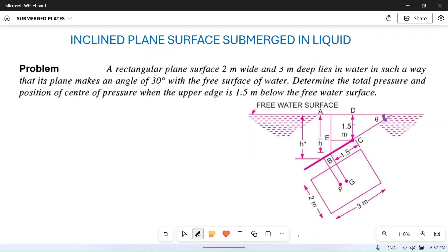This angle theta with free surface of water is 30 degrees. Determine the total pressure and position of center of pressure when the upper edge is 1.5 meter below the free surface of water.